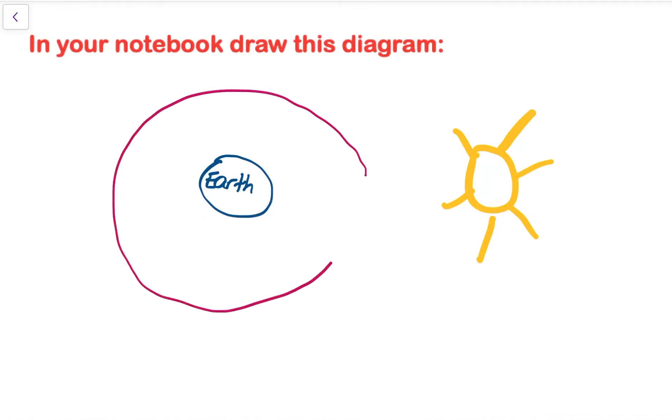So let's draw a simple diagram of this in our notebook. You don't need to use different colors. Just go ahead and draw the sun. We will then draw the earth. And then we're going to draw the moon's orbit — we'll draw that as a circle. And we are going to draw the position of the moon in two different locations. In this case, the moon is in between the earth and the sun.